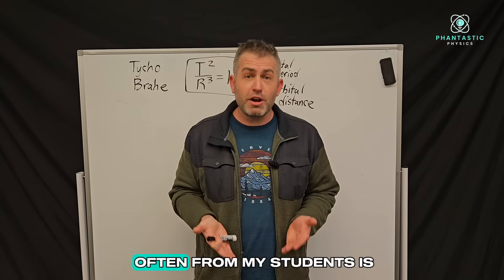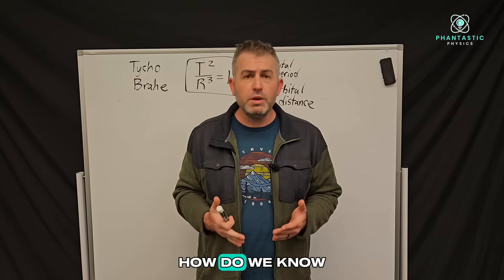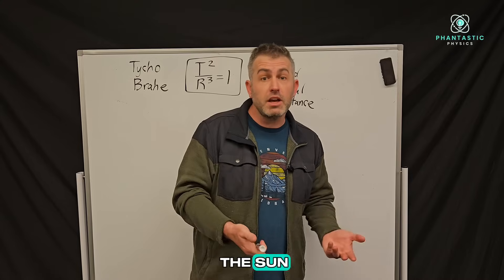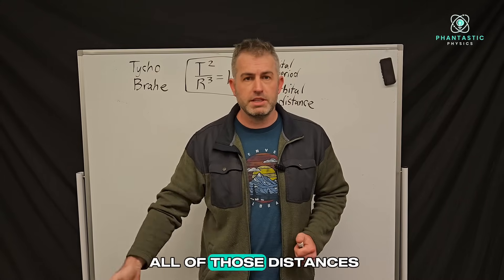One of the questions that I get most often from my students is how do we know how far away other planets in our solar system are from the sun? How do we know all of those distances?